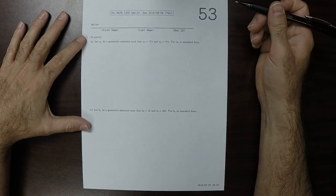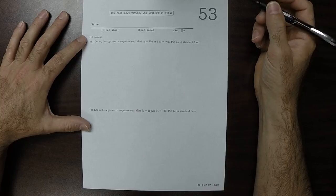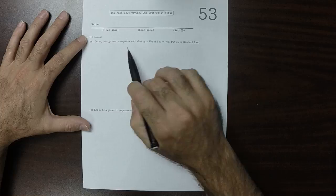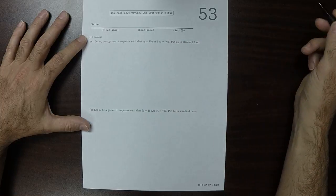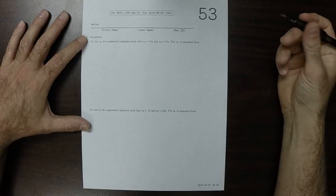This is the key to written homework 53. Okay, so we're told that a_n is a geometric sequence and we're given two terms. And we are instructed to put it in standard form.